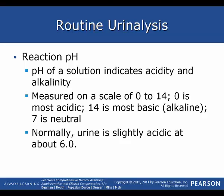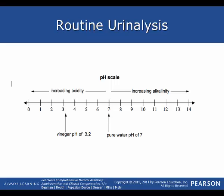We're going to first start out with pH. The pH of a solution indicates the acidity and alkalinity of a substance. It's measured on a scale of 0 to 14. Zero is the most acidic, 14 is the most basic or alkaline, and 7 in the middle is neutral. Normally urine is just slightly acidic at about 6.0. As you decrease in numbers you are increasing in acidity; as you increase in numbers you are increasing in alkalinity.